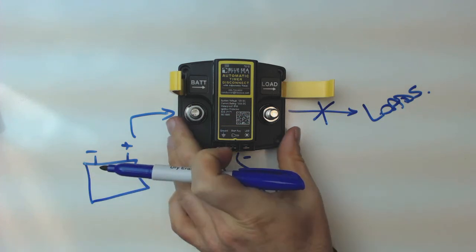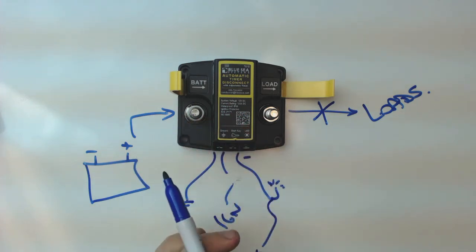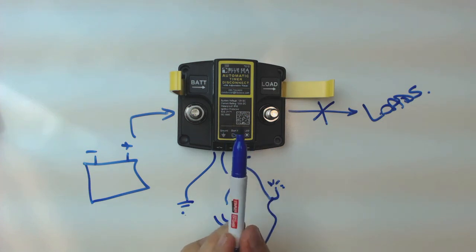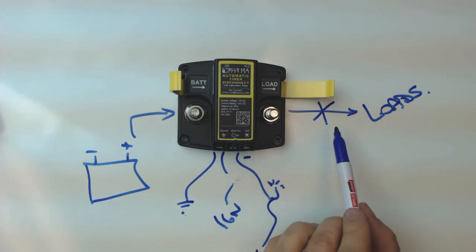So in addition to the timing circuit, it also has a low voltage disconnect circuit in it. And once the battery reaches a certain voltage, regardless of the time that your timer is set at, then the unit here will open up the solenoid and cut power to the load.